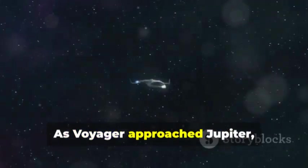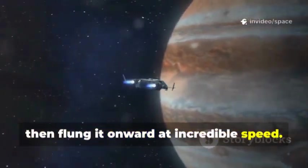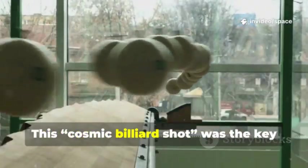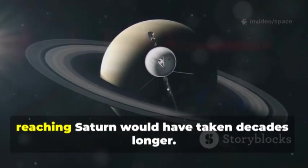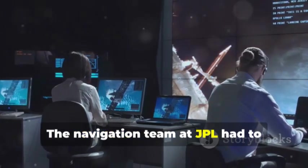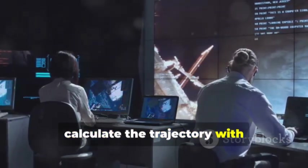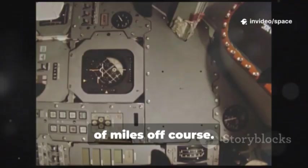As Voyager approached Jupiter, the planet's gravity pulled it in, then flung it onward at incredible speed. This cosmic billiard shot was the key to the Grand Tour. Without gravity assists, reaching Saturn would have taken decades longer. The navigation team at JPL had to calculate the trajectory with mind-boggling precision.